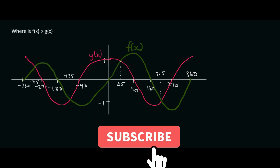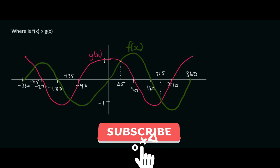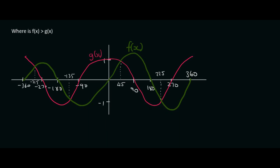Hello everyone. In this lesson we're going to talk about something very important — it's something that students do struggle with, just because they haven't practiced it enough. So here the question is saying where is f of x greater than g of x. Don't let that put you off — f of x just means the green graph. This symbol means bigger than. So where is green bigger than pink? That's all we're saying here.